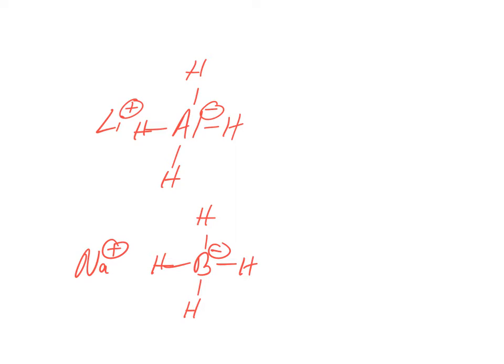I've drawn out lithium aluminum hydride and sodium borohydride. Aluminum and boron are both in the same group of the periodic table — they have three valence electrons. If they have a full octet, as they both do here, they actually carry a negative charge. Aluminum has a negative charge and boron has a negative charge. But aluminum and boron are both metal-like, so who owns the electron density? The H's are electron rich — they're hydrides. Even though the Lewis structure puts the minus charge on boron or aluminum, that doesn't indicate where the electron density actually is. It's on the H's.